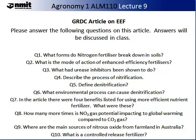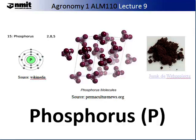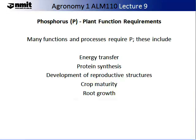Now we are going to talk about the macronutrient phosphorus. On the slide you see three images: one of red phosphorus as a powder, one of many phosphorus molecules, and a Wikipedia image showing the elemental state of phosphorus. It has an atomic number of 15. Phosphorus is involved in many plant function requirements and is found in high concentrations within the plant. These functions include energy transfer, protein synthesis, the development of reproductive structures, crop maturity and healthy root growth.